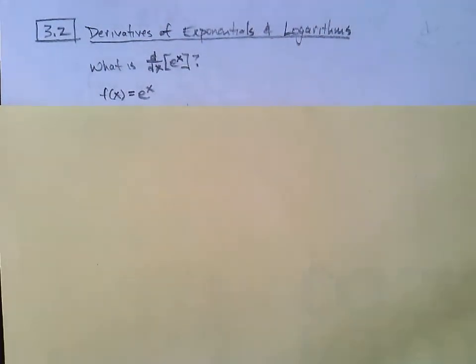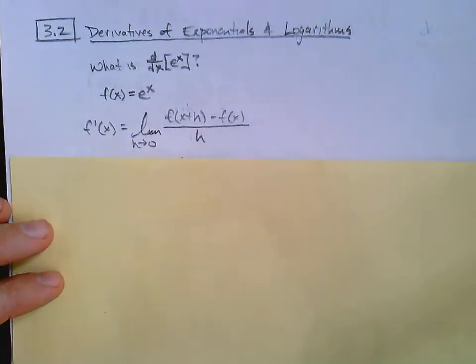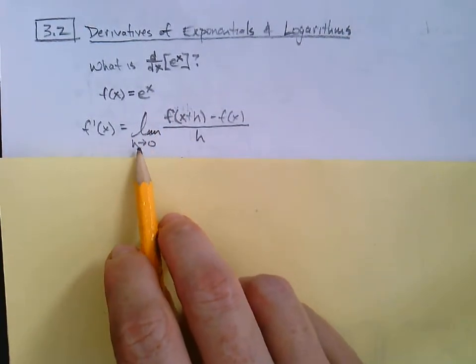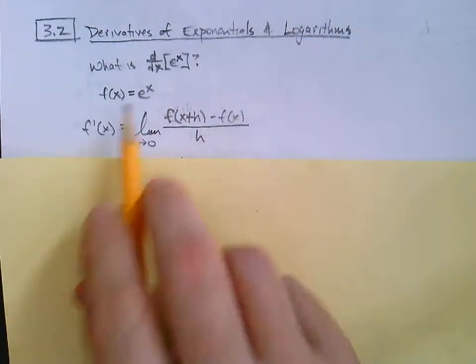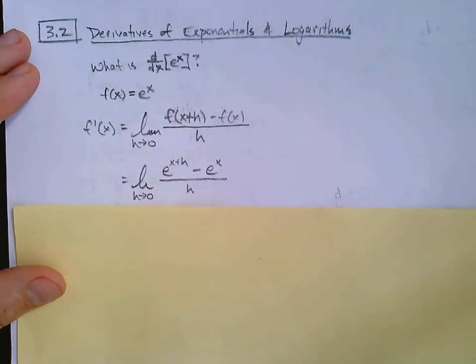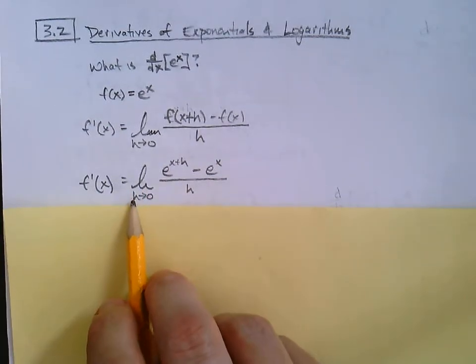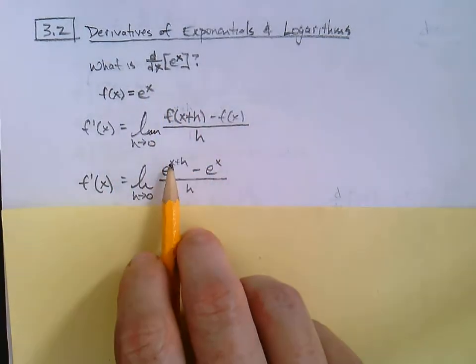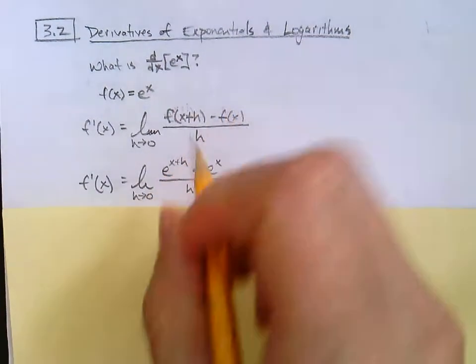We're going to say, okay, if f of x equals e to the x, what would that limit as h approaches 0 of the difference quotient do? And so here is just that formula that we've used many times by now. f prime of x equals the limit as h approaches 0, f of x plus h minus f of x all over h. So we'll apply that to this function and arrive at this. f prime of x equals the limit as h approaches 0, f of x plus h. Well, the x plus h would go in, so it would be e raised to the x plus h minus e to the x. And that's all divided by h.